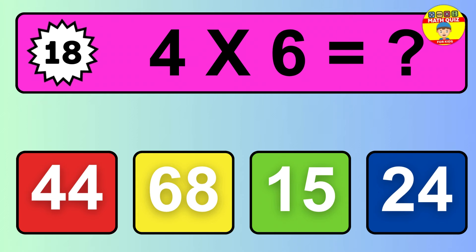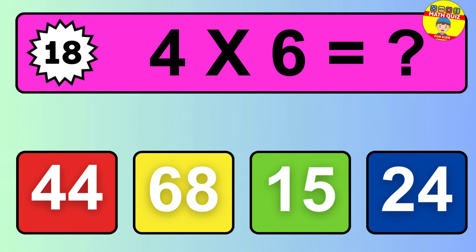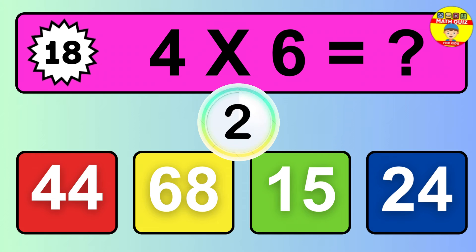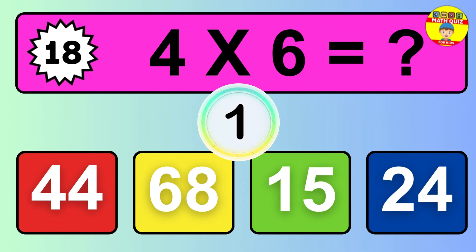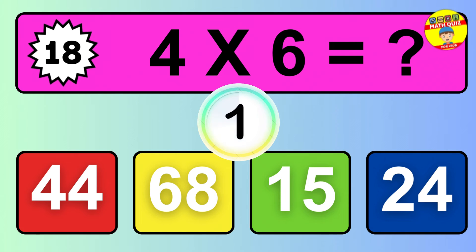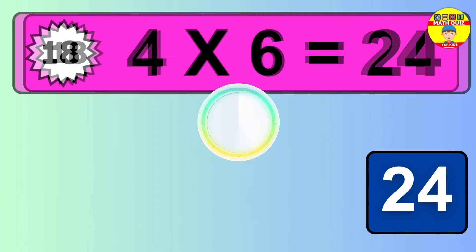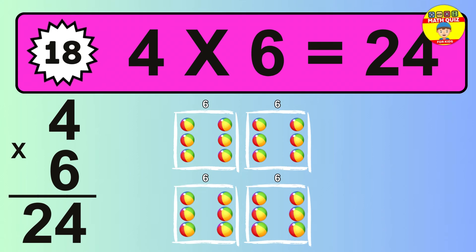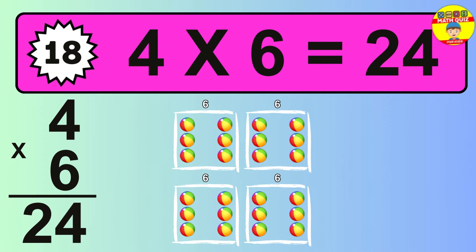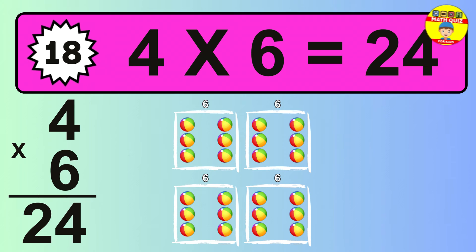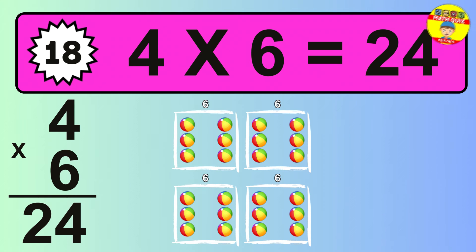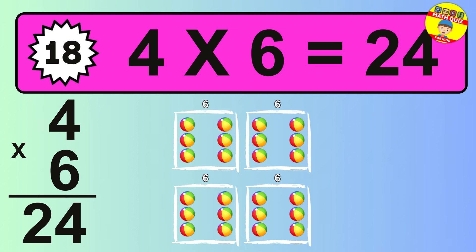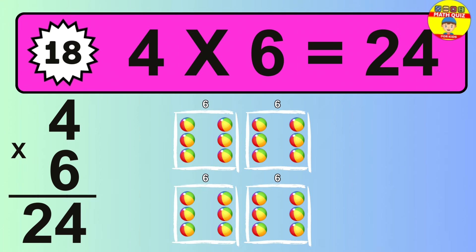Question 18. 4 times 6 equals what? The answer is 4 times 6 is 24. To calculate, we have 4 groups with 6 balls each one. So, how many balls do we have? 24 balls.